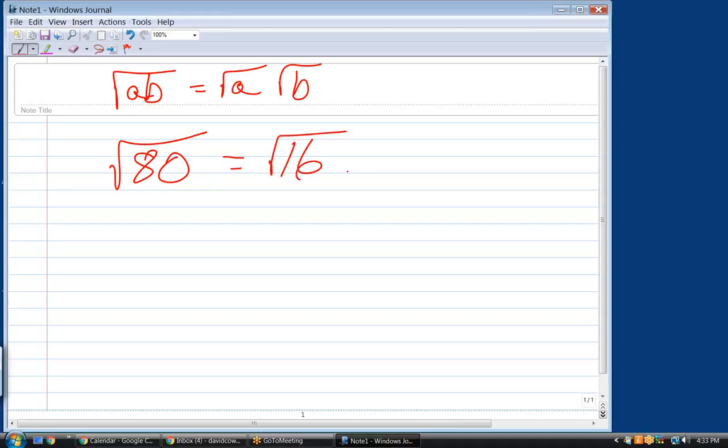You said 16. What's the other factor? 5. Okay. What does that turn into? 4 square root of 5. Okay, good.